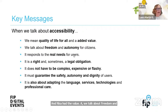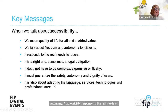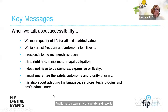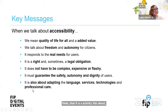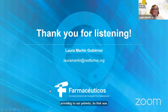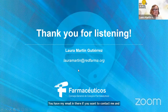Key messages to conclude: when we talk about accessibility, we mean quality of life for everyone — it is an added value. We talk about freedom and autonomy. Accessibility responds to the real needs of users and is a right, and as mentioned, sometimes a legal obligation. It does not have to be complex or expensive — it has to be clever. It must guarantee the safety, autonomy, and dignity of users. From the professional perspective, accessibility is about adapting the language we use, the services we provide, the technologies we offer from our community pharmacies, and ultimately the professional care we provide to our patients. Thank you very much for listening.